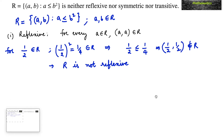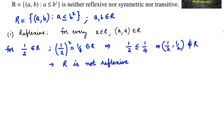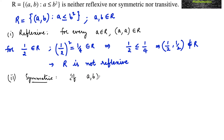Now let us check for symmetric. The condition for symmetric is: if (a, b) belongs to R, then (b, a) must belong to R, for a and b real numbers.